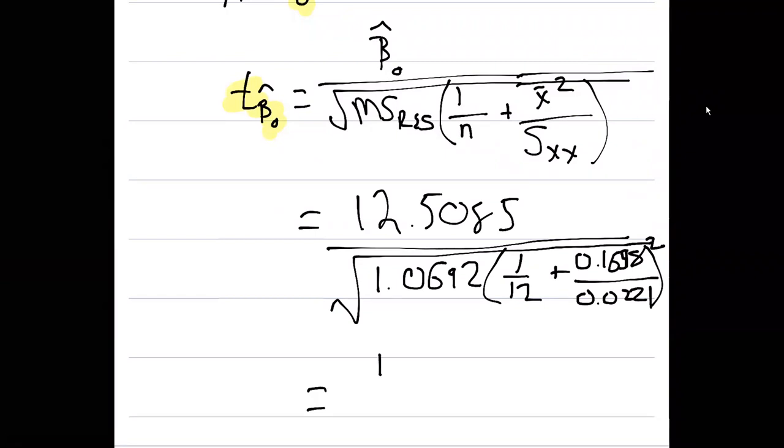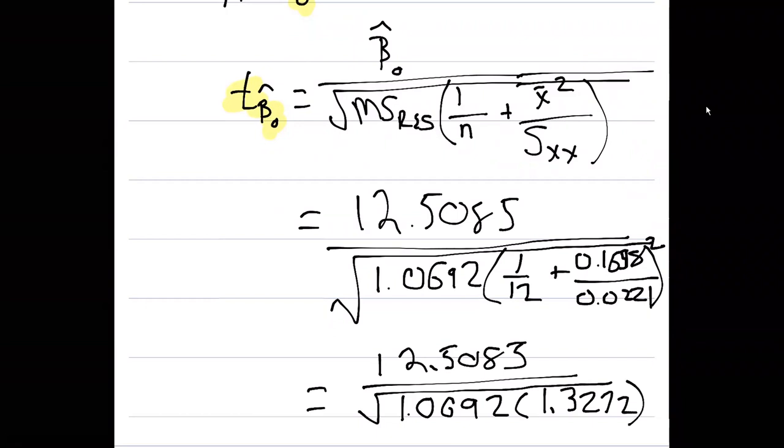When we do that, we'll get 12.5085 divided by all of this under the square root sign. Again, the residual mean square 1.0692, multiply that by 1.3272. That should be everything here in the parentheses, works out to be 1.3272.